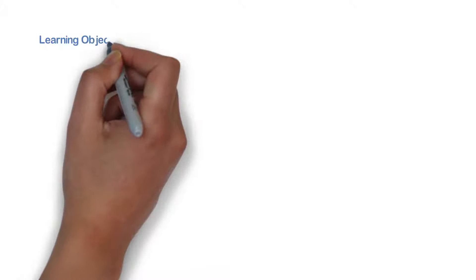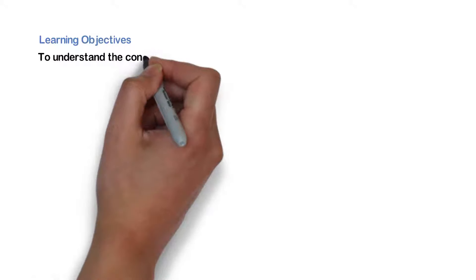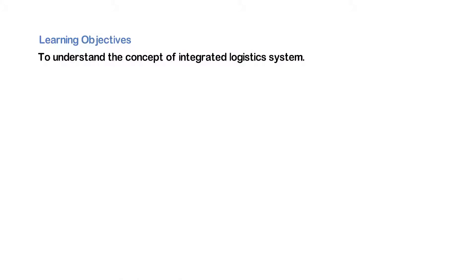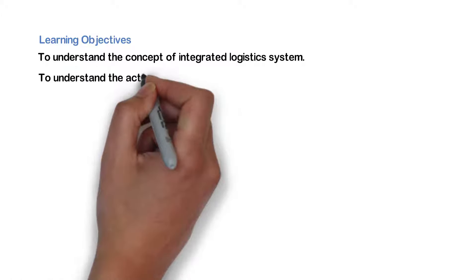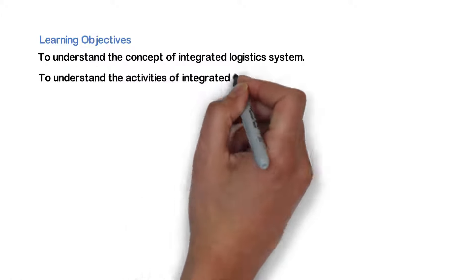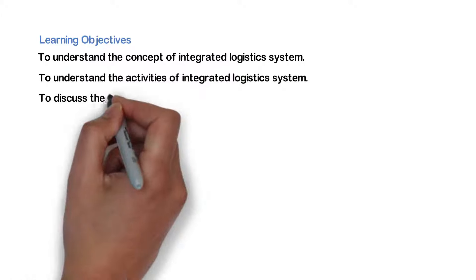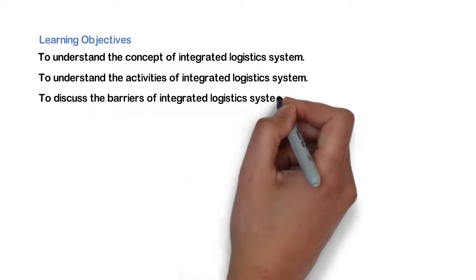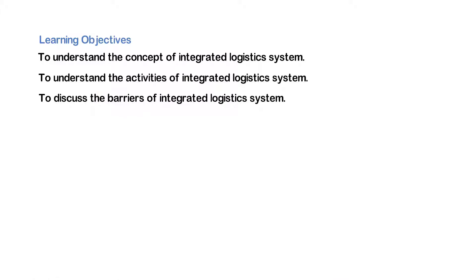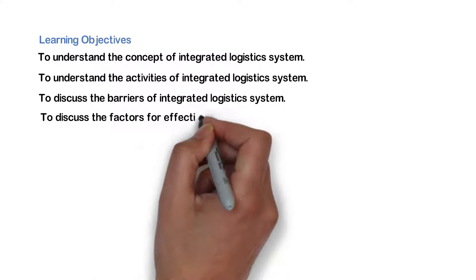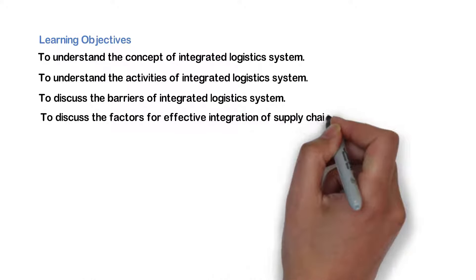The learning objectives of this module are to have an understanding of the concept of integrated logistics system, to understand the activities of integrated logistics system, to discuss the barriers of integrated logistics system, and to discuss the factors affecting integration of supply chain.